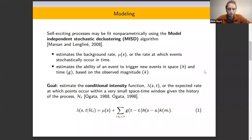This approach will first estimate the background rate, mu, which is the rate at which background events occur stochastically in time.